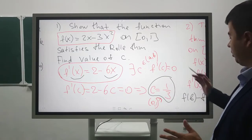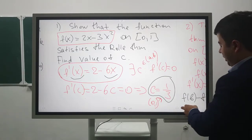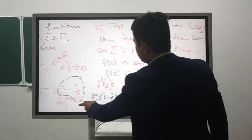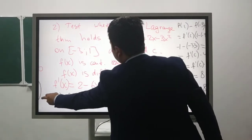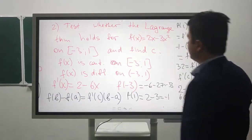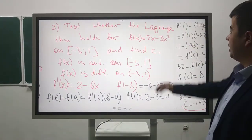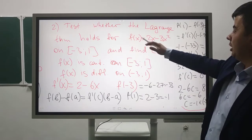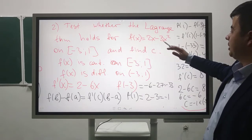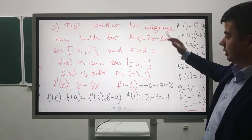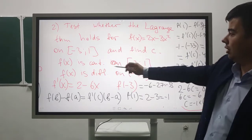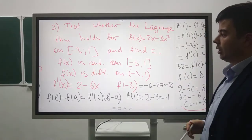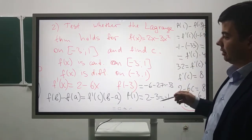If it's clear, we'll go to the next example. The second one is: test whether the Lagrange theorem holds for f(x) = 2x - 3x² on the segment [-3, 1] and find c.